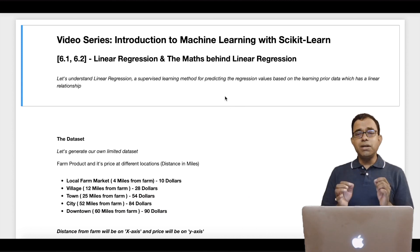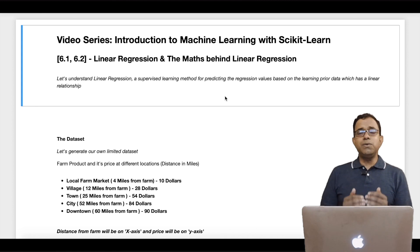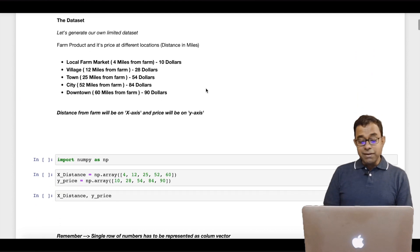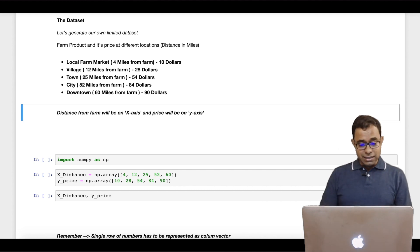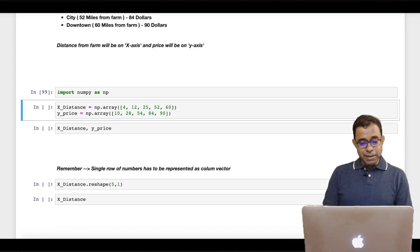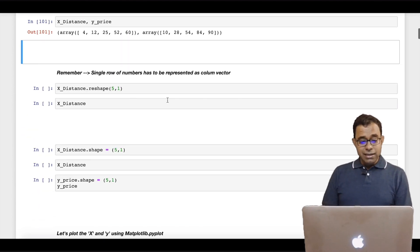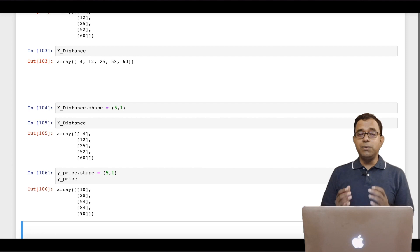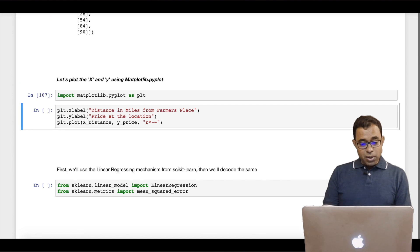In the last chapter we talked about how linear regression works using scikit-learn. We will go through it once again, just glance through it, and then we will come to the mathematics part of it. In the last chapter we created a small dataset regarding a farm product and its price at a particular distance. We used numpy to create x and y — numpy is the backbone of machine learning — and then we looked into some tricks to change the shape of a numpy array. In machine learning we provide column vectors, not row vectors.